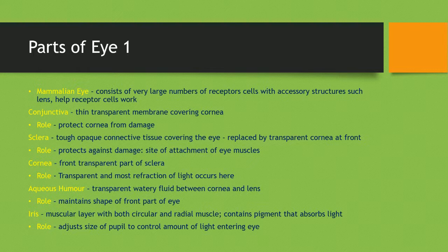The mammalian eye is an organ that consists of a very large number of receptor cells with accessory structures such as a lens to help the receptor cells work. The first layer is the conjunctiva, which is a thin transparent membrane covering the cornea, and its role is to protect the cornea from damage. The sclera is a tough opaque connective tissue that covers the eye and is replaced by the transparent cornea at the front of the eye. Its role is to protect against damage and it is the site of attachment of the eye muscles.